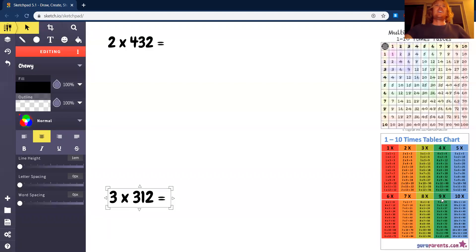Hi, I'm Antares. In this lesson, I'm going to show you how to multiply a three-digit number by a single-digit number. So three numbers, just like we can see over here, two times 432.